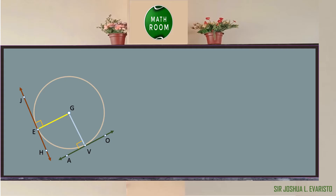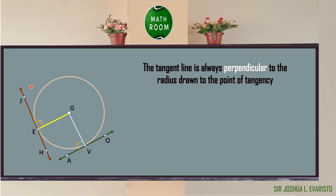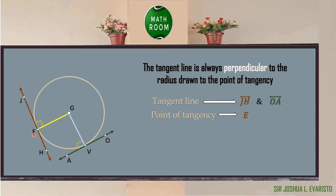Tangent line is always perpendicular to the radius drawn to the point of tangency. In the given figure, we have circle G, and also we have two tangent lines: line JH, which is the red line, and line OA, which is the green line. We also have two points of tangency. The first point of tangency is point E of the red line, and point V of the green line. Moreover, we have two radii: segment EG, which is the yellow segment, and segment GV, which is the blue segment.